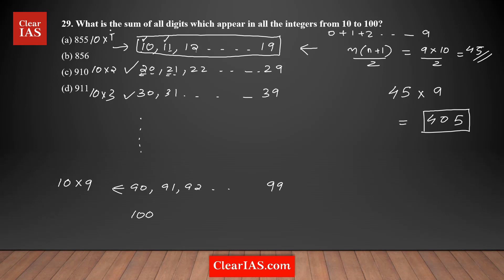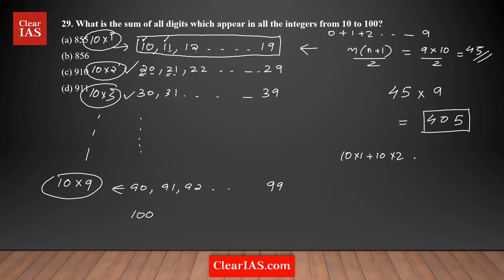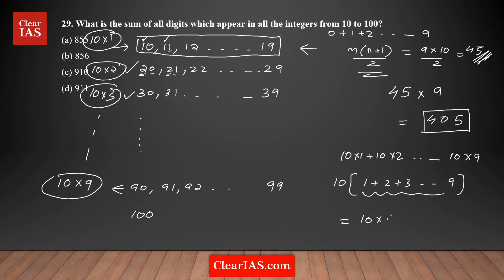The total sum of the tens place digits across all nine sets is: 10×1 + 10×2 + 10×3 + ... + 10×9. Taking 10 as a common factor gives 10 × (1 + 2 + 3 + ... + 9) = 10 × 45 = 450.